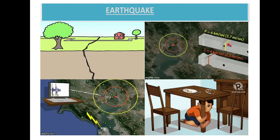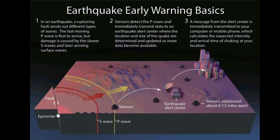Now we will discuss earthquake. The earthquake warning is based on the following: the earth fault sends out different types of waves — S wave, P wave, love wave, and Rayleigh wave. Damage is caused by the slower S wave and later-arriving surface waves. The P wave is detected first and immediately transmits data to an earthquake alert center, where the location and size of the earthquake are determined and updated as more data become available.